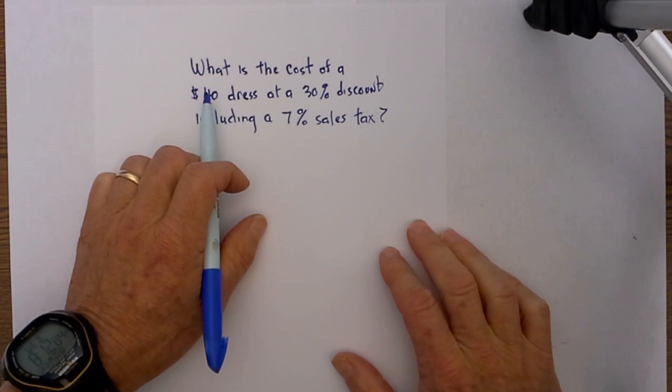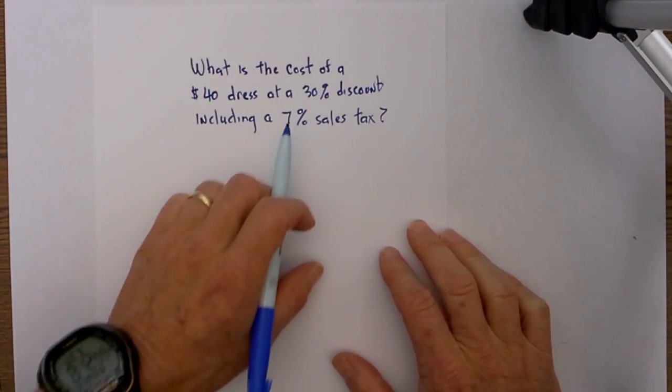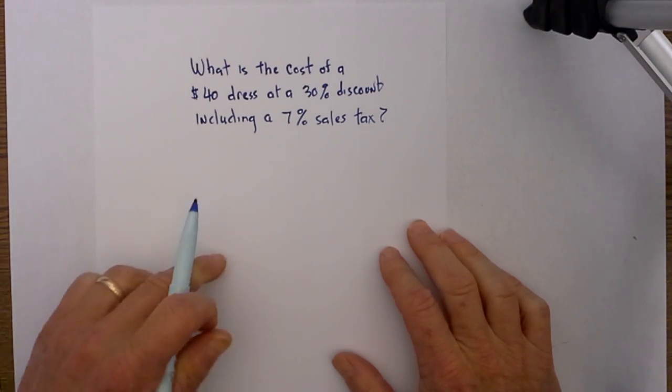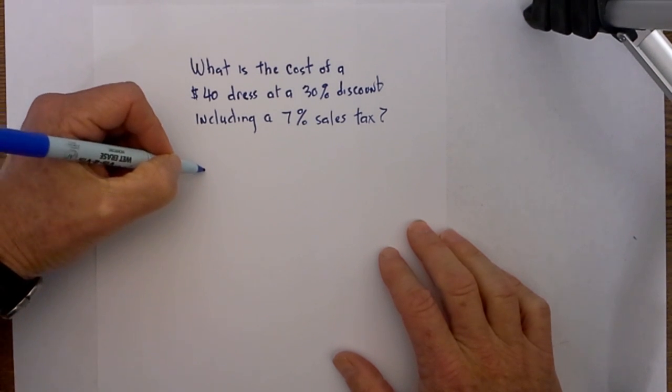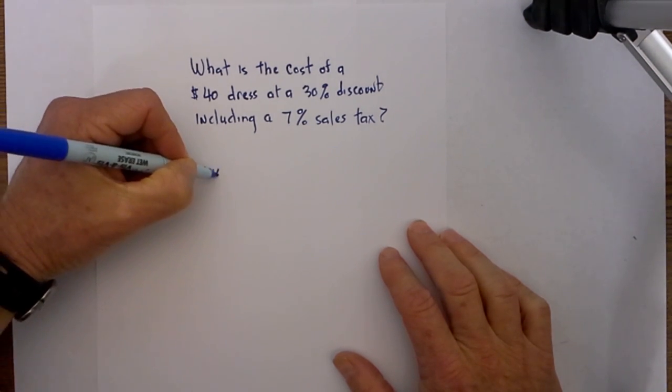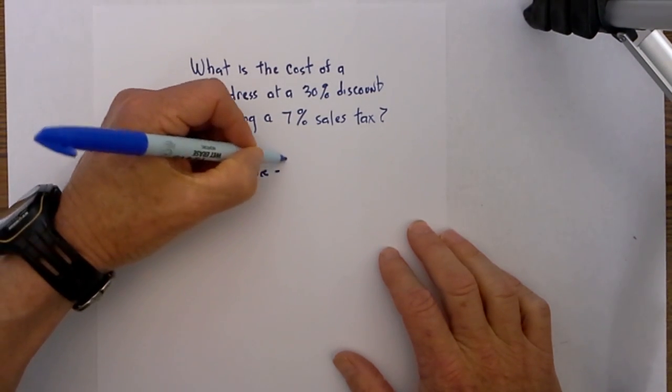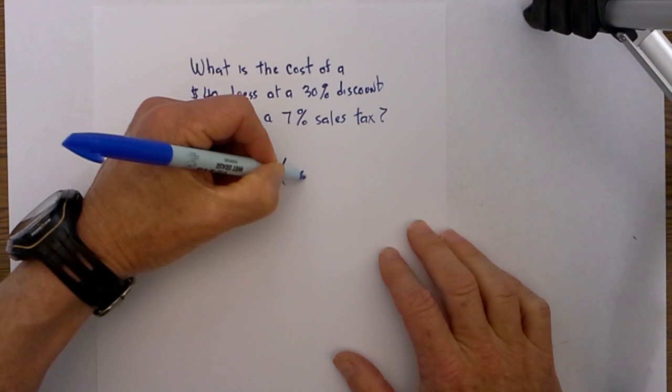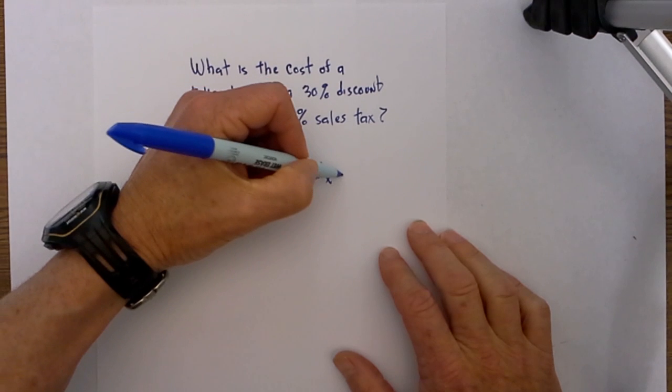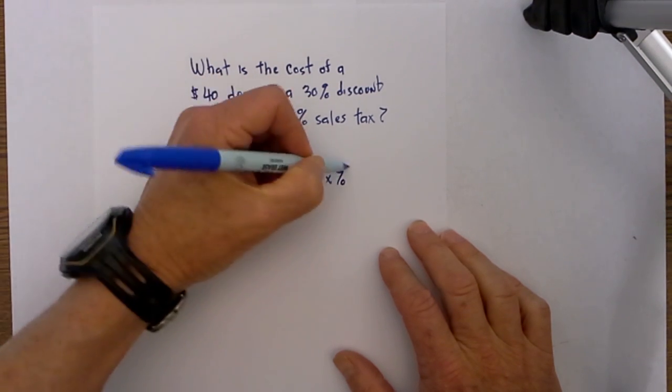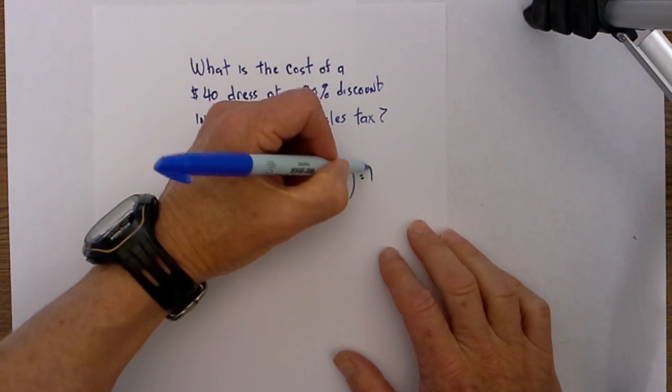We first calculate the discounted price and then multiply this discounted price times the sales tax. In order to find the discounted price, we can use the following formula: original price minus the original price times the percent discount equals the discounted price.